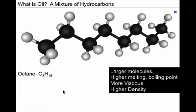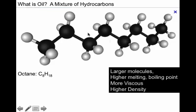So what is oil? It's a mixture of hydrocarbons. Here we see octane, or C8H18, with eight carbons and 18 hydrogens. Now it's not always in a straight line — it can be branched, it can be circular, and there can be many different numbers of carbons.